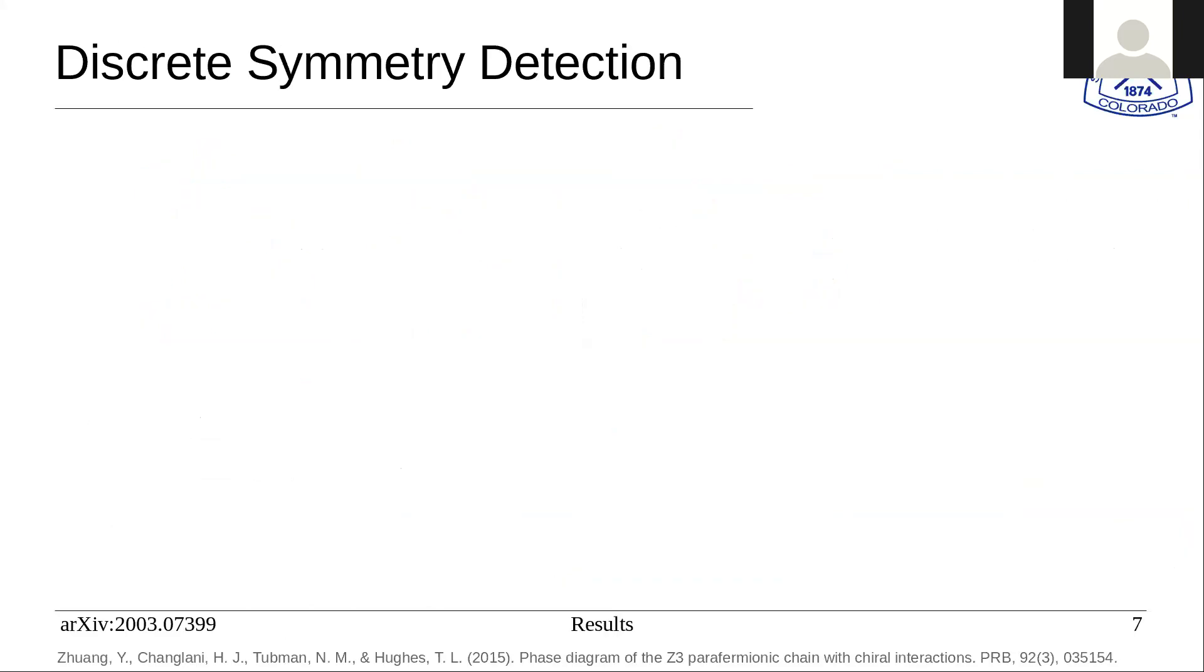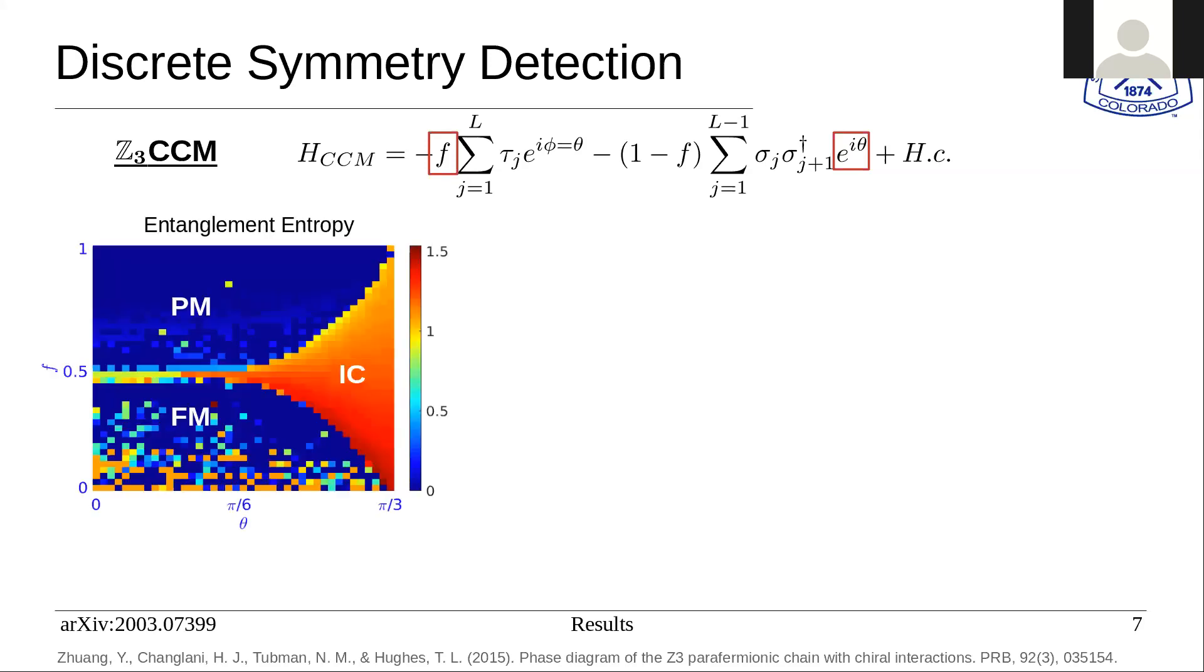First we'll talk about the simplest phase transition. We'll talk about the Z3 chiral clock model. The Hamiltonian is listed here, and the parameters we tune are F and theta, as highlighted by the red boxes. This is a Z3 symmetric version or generalization of the Z2 transverse field Ising model. Most originally, the entanglement entropy is the best way for acquiring the phase diagram. Here you can see we have a paramagnetic indicated by PM, a ferromagnetic by FM, and incommensurate designated by IC. Three different phases occurring here.